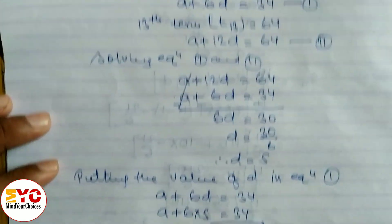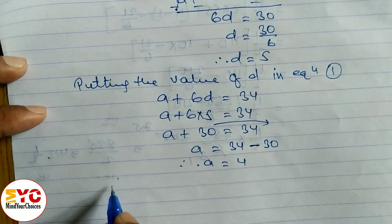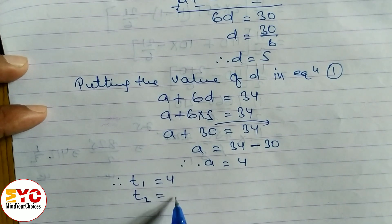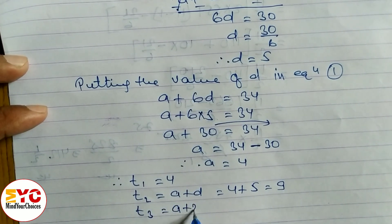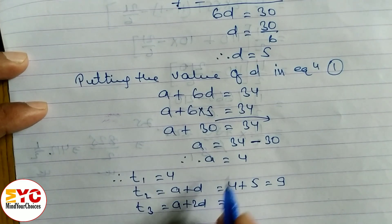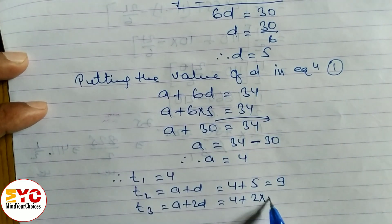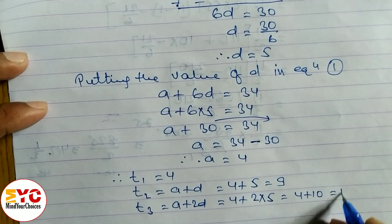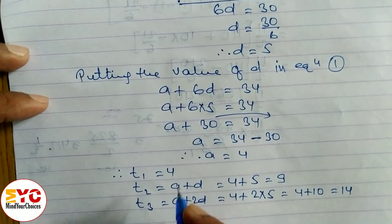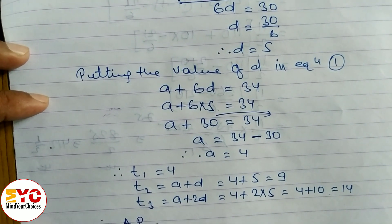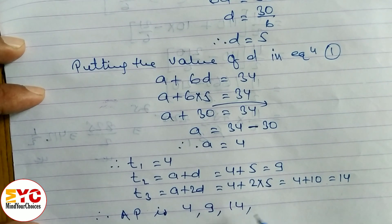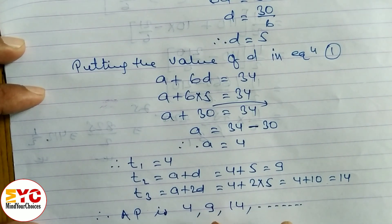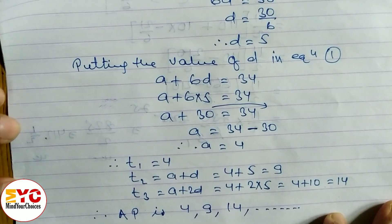Now to determine the AP, we find the terms. T1 equals 4. T2 formula is a plus d: 4 plus 5 equals 9. T3 formula is a plus 2d: 4 plus 10 equals 14. So the AP is: 4, 9, 14, ... You can find T4 and T5 as well — at least three to four terms.